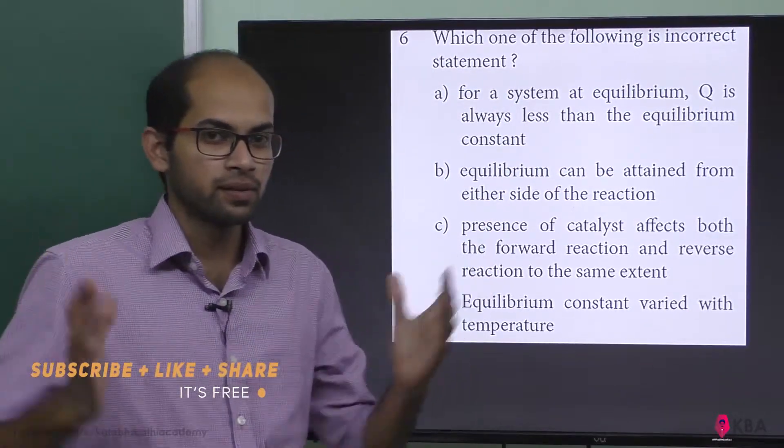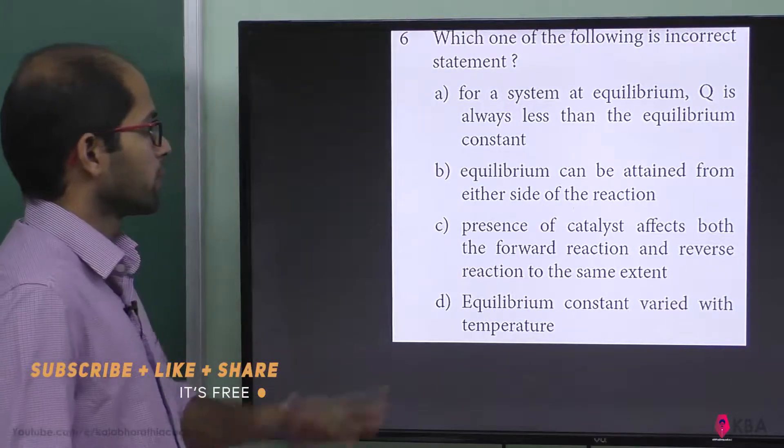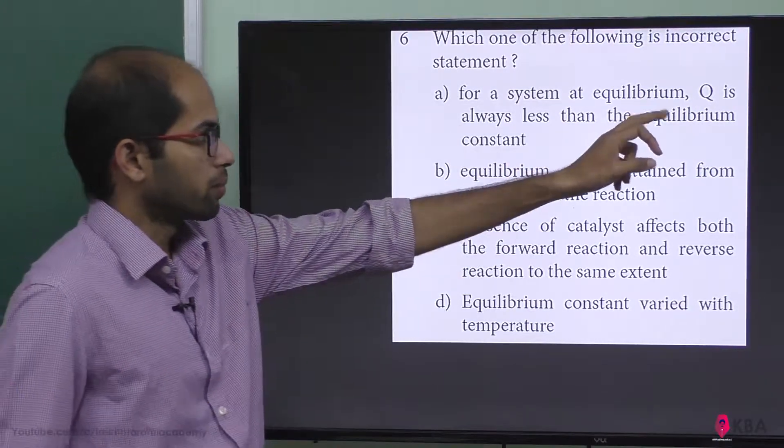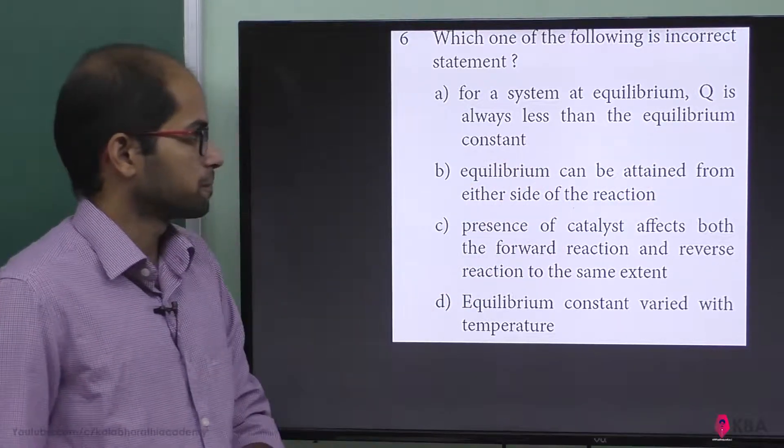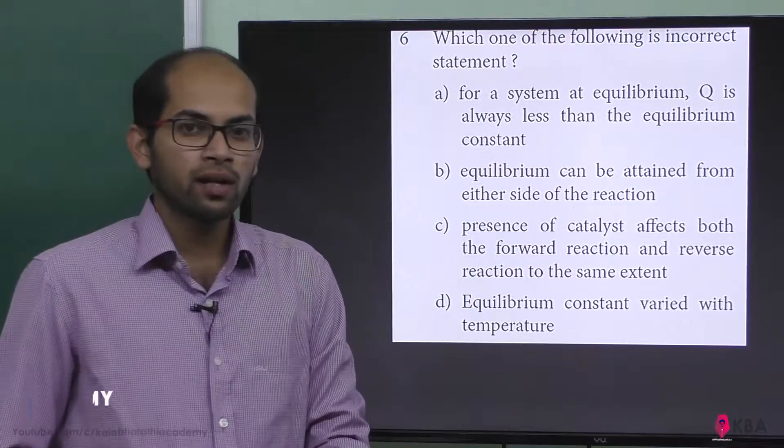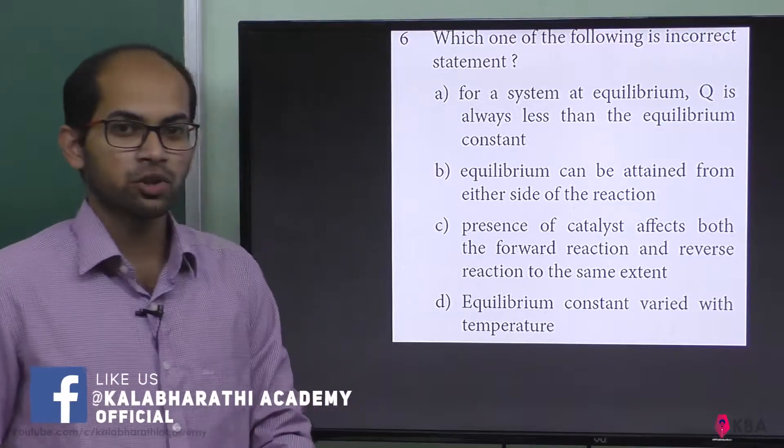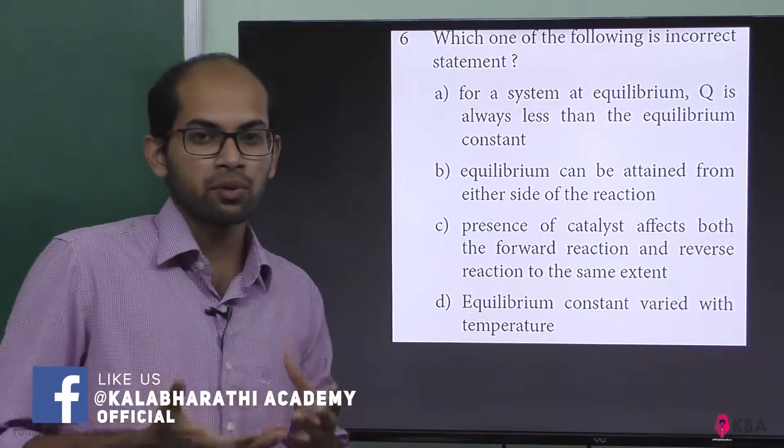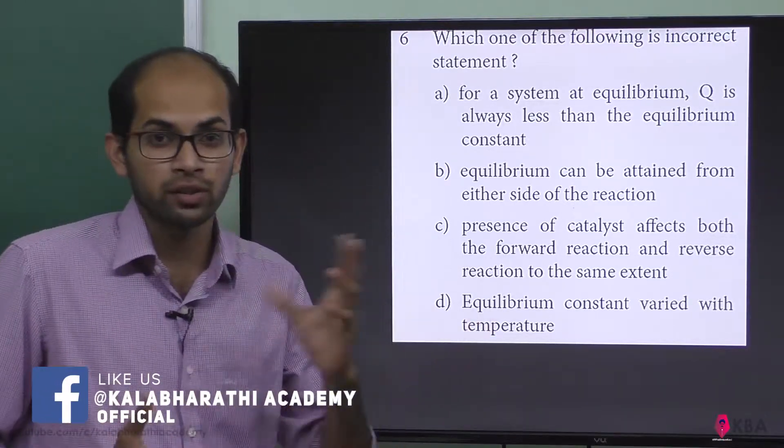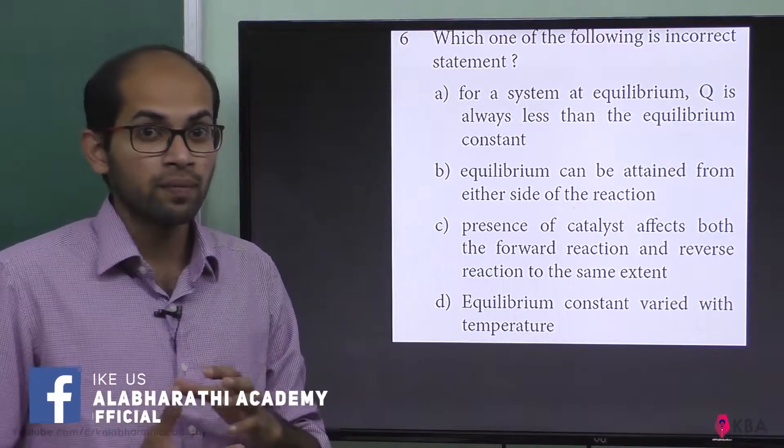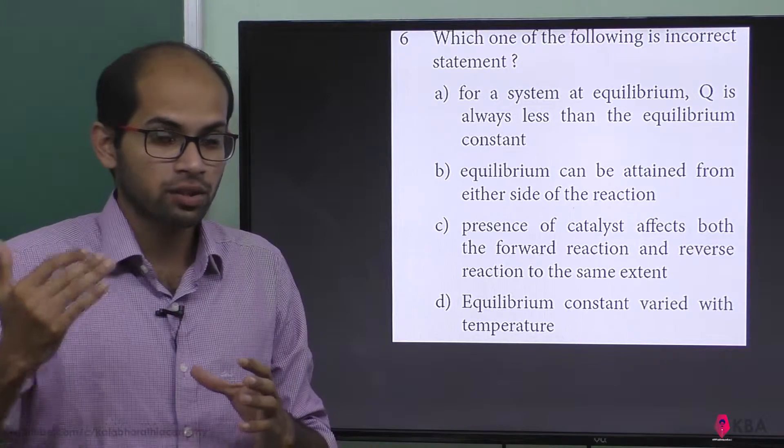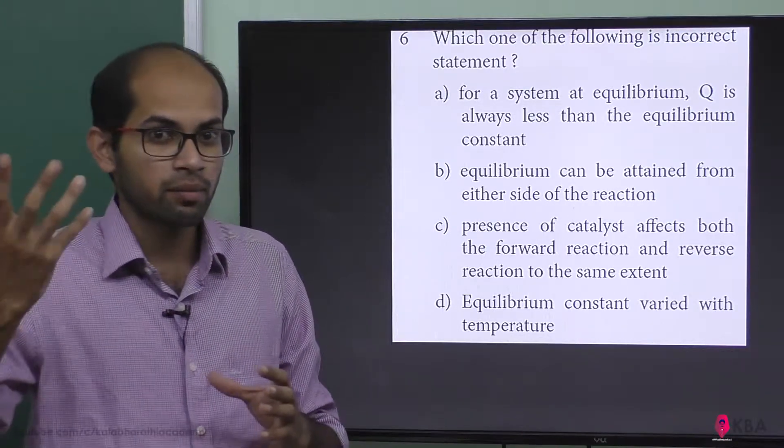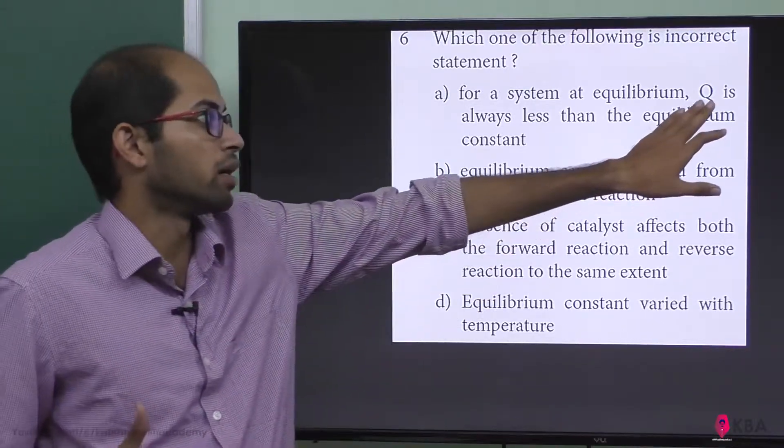For a system at equilibrium, Q is always less than the equilibrium constant. Q is the reaction quotient, which represents non-equilibrium conditions. It's the concentration of products divided by concentration of reactants. To calculate Qc, we use this ratio.